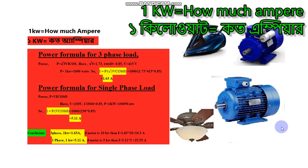Now let's talk about the single-phase load calculation. The power formula for a single-phase motor is P = V × I × cosθ. Here, V = 230 volts and cosθ = 0.85. For a load of P = 1 kilowatt (1000 watts), rearranging gives I = P ÷ (V × cosθ) = 1000 ÷ (230 × 0.85).